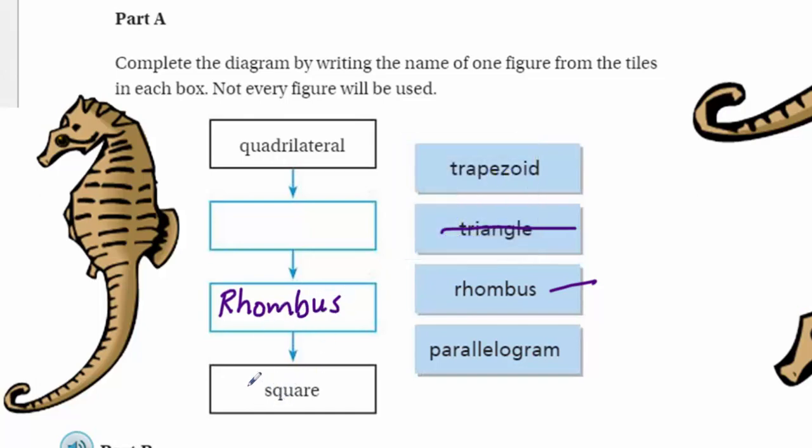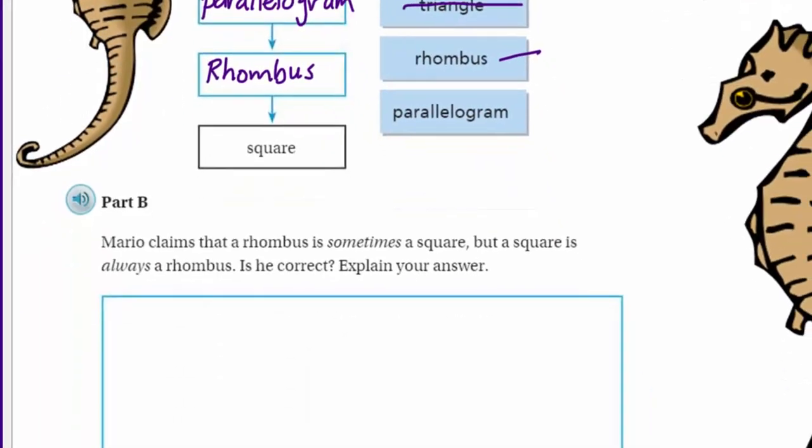That would only leave parallelogram or trapezoid. Well, a trapezoid, unfortunately, you have exactly one pair of parallel lines. Here, parallelogram has two sets. So I'm going to say you're out of this one, I'm sorry. And here I'm going to put parallelogram.